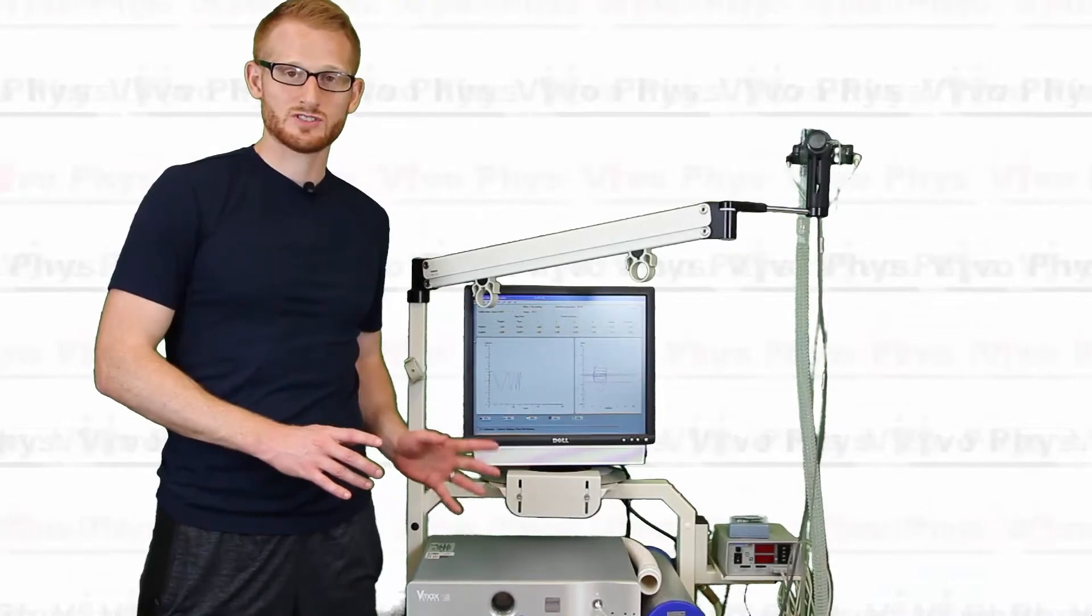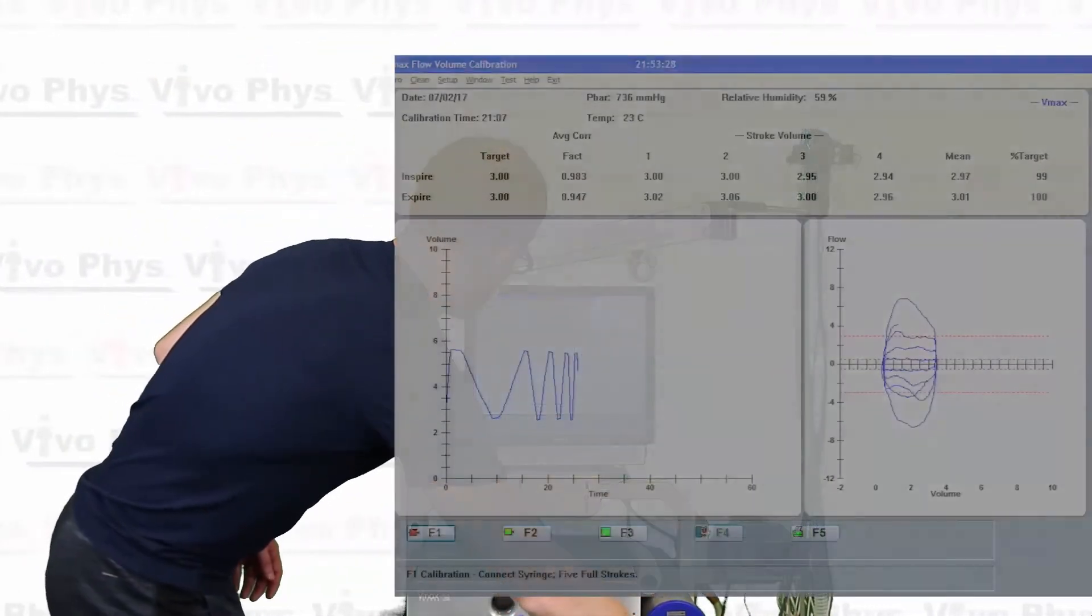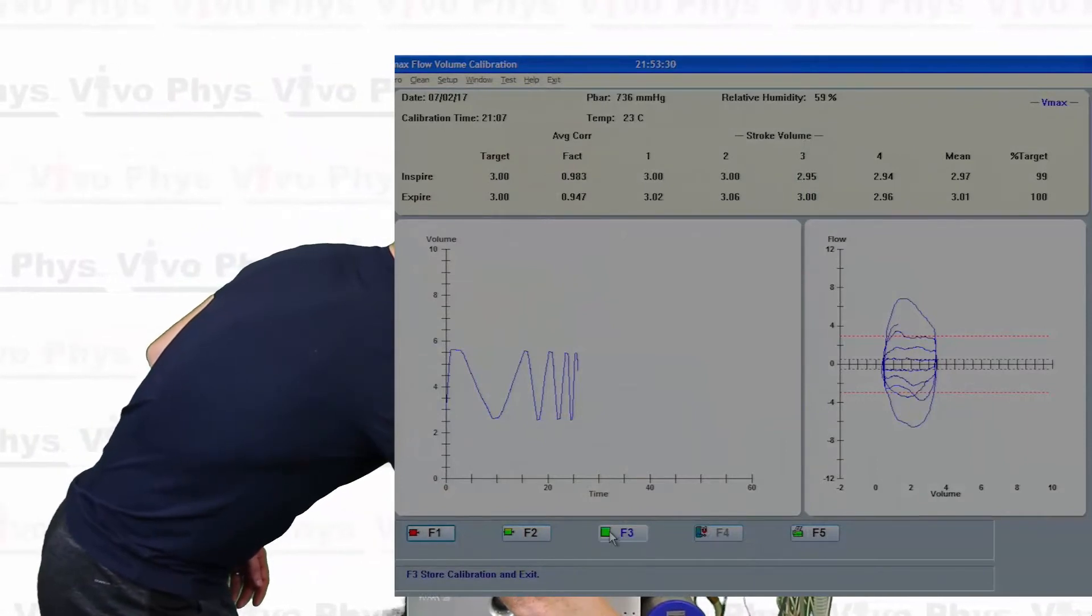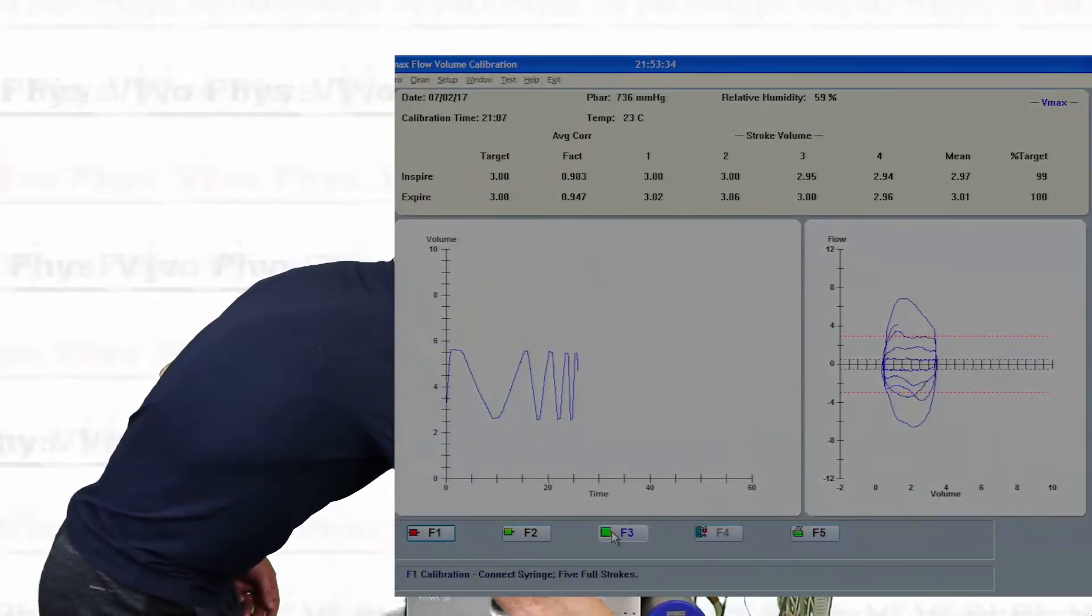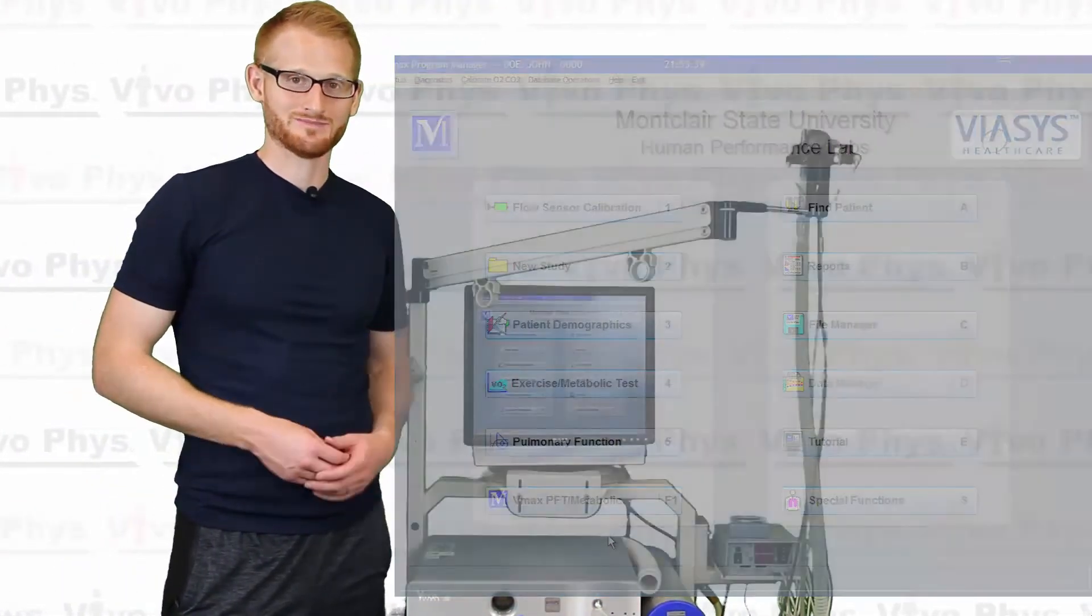Okay, so when you're all done with the flow calibration, the last thing you want to do is make sure you save it before you exit. So if you come down here, hover over these buttons, the one you're going to want is the one that says store calibration and exit. So you're just going to go ahead and click that and that's it. So flow calibration is done at that point.